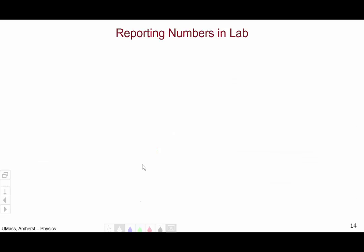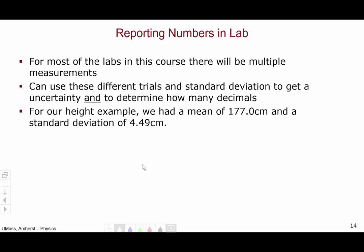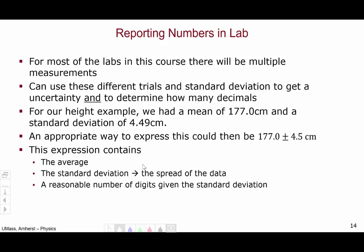So how will we report numbers in the laboratory exercises in this class? Most of the labs in this course will have multiple measurements. We can use these different trials to calculate a mean and a standard deviation. And we can use this standard deviation as an uncertainty and use it to tell us how many decimals we should record. In our height example, we had a mean of 177 centimeters and a standard deviation of 4.49 centimeters. An appropriate way to represent this result would be 177 ± 4.5 centimeters. This representation has a lot of advantages. It represents the average, the 177, and we have the standard deviation, which gives the person reading the number a sense of the spread of the data. And we have a reasonable number of digits.